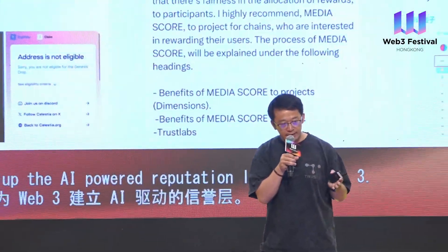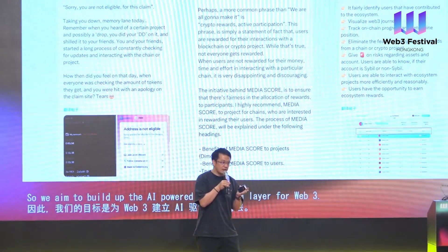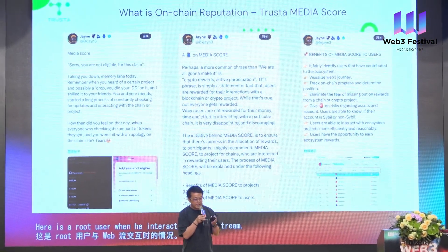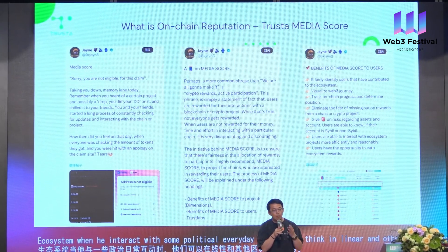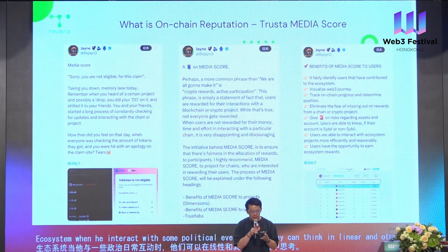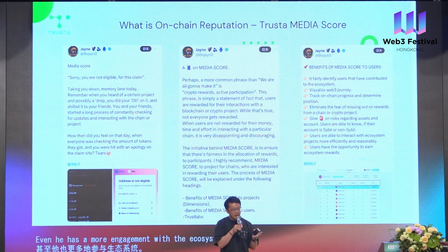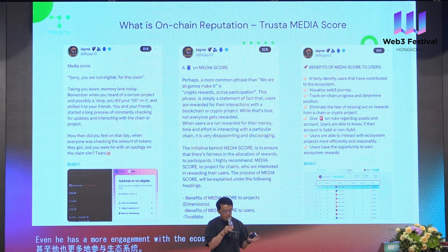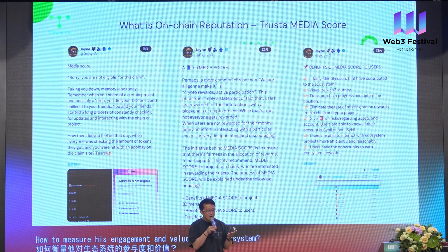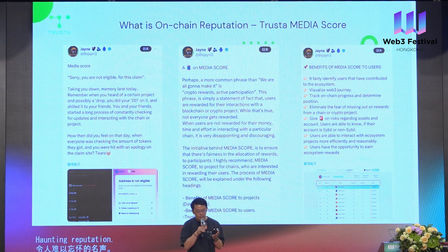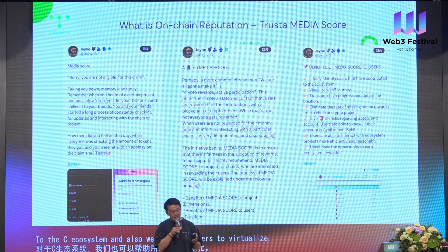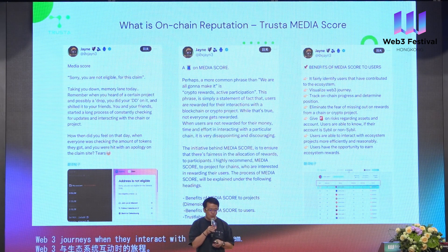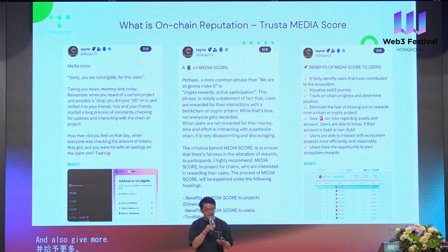Here is a real user who interacts with the Web3 ecosystem every day — on ZkSync, on Linea, and other blockchains. He is very curious whether he can get more rewards, even when he has more engagement with the ecosystem. So how to measure his interaction, how to measure his engagement and value to the ecosystem, which is a very important challenge. So we proposed on-chain reputation — we call it the media score — to help identify valuable users who can contribute to the ecosystem. We can help users visualize their Web3 journeys and give more fair rewards to users.